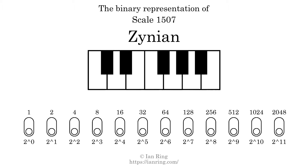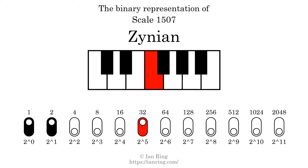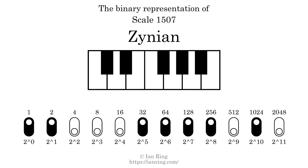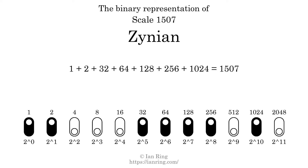The binary representation of this scale is determined by mapping tones of the scale to binary digits. Each binary digit represents a power of 2. To get the scale number, we add the powers of 2 together. The powers of 2 that are present in the scale, all added together, equals 1507.